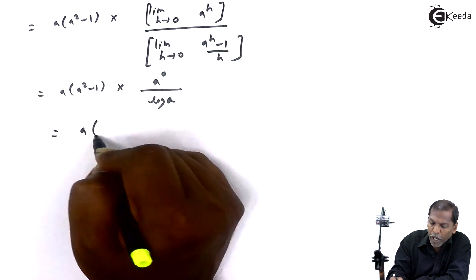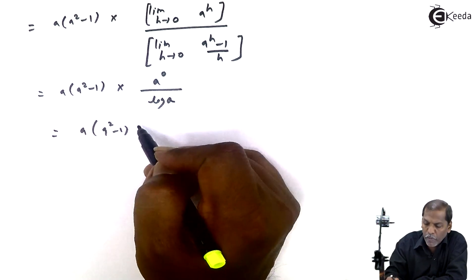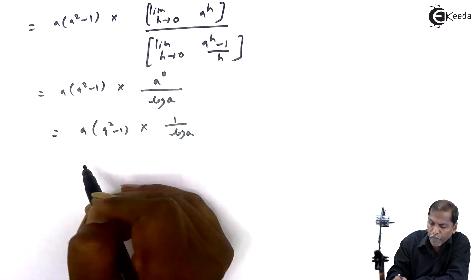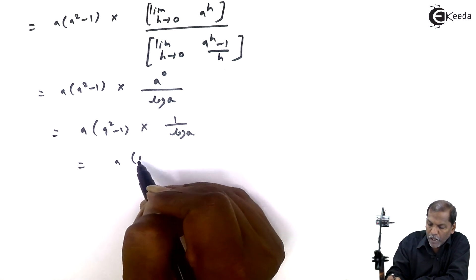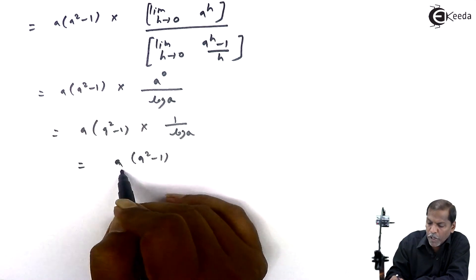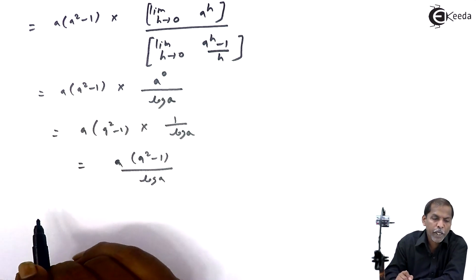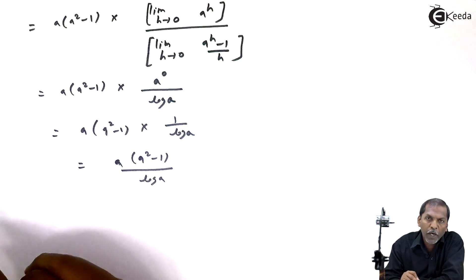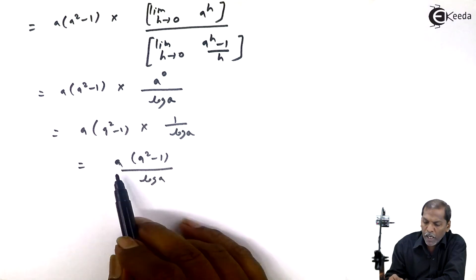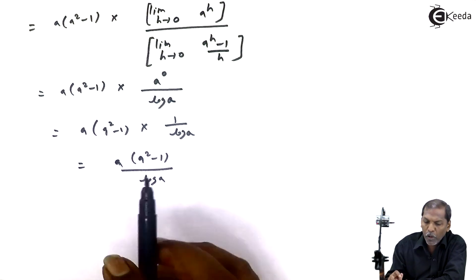So the next step gives us a·(a² − 1)·a⁰ upon log a. Since a⁰ equals 1, the final answer is a(a² − 1)/log a. This completes question number 2: the integral from 1 to 3 of aˣ dx equals a(a² − 1)/log a.